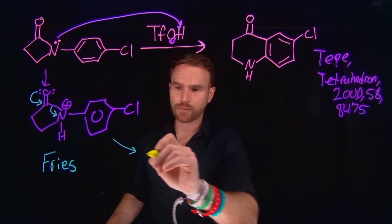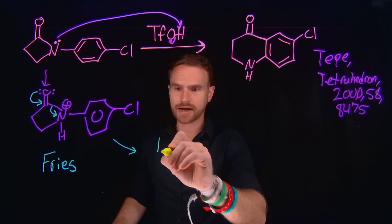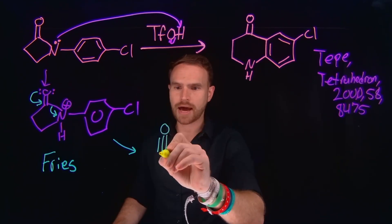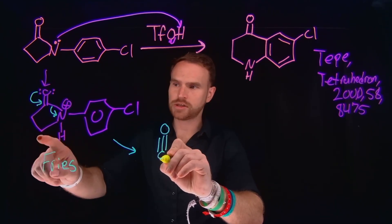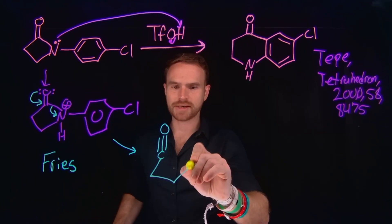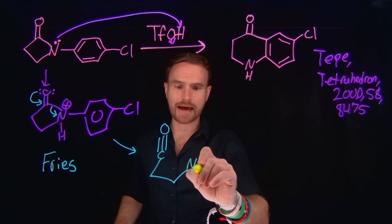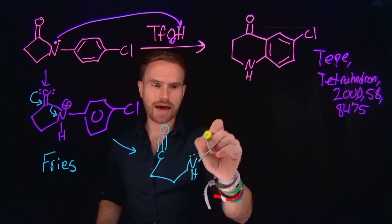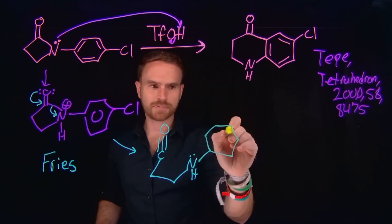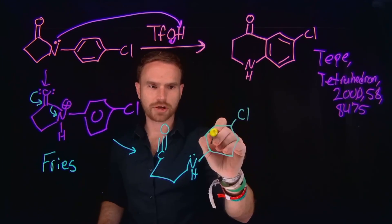The product of this Fries type rearrangement is that carbonium ion, where now we have this positively charged carbon located at this position, then one, two carbons, and then this nitrogen still located here, except now it's going to be neutral with a lone pair of electrons on it, and you still have your benzene ring at this position with that para-chloro position on it.